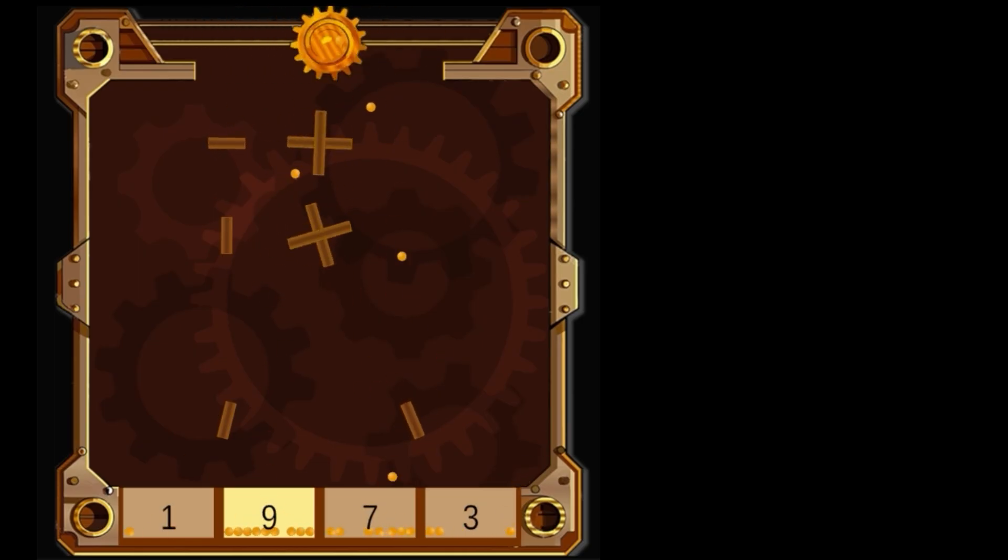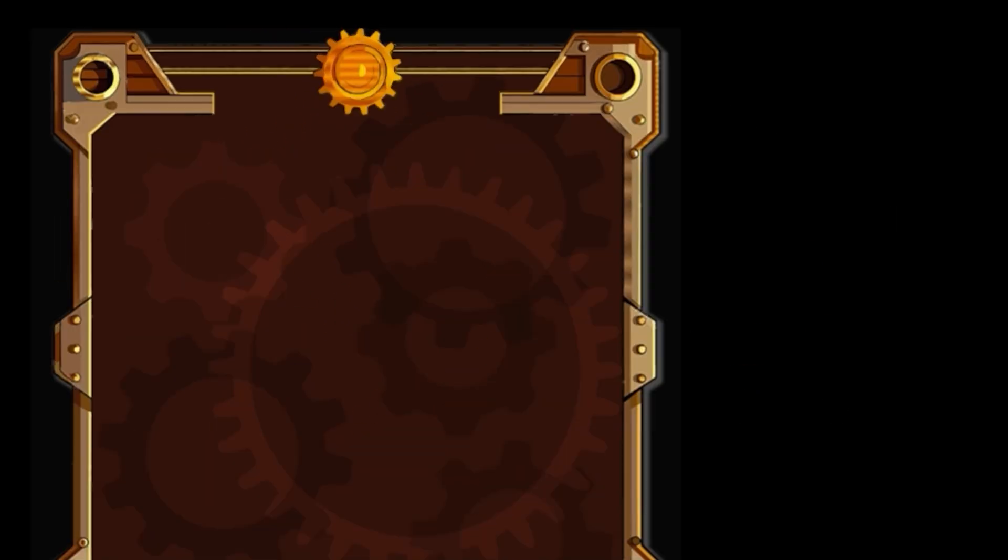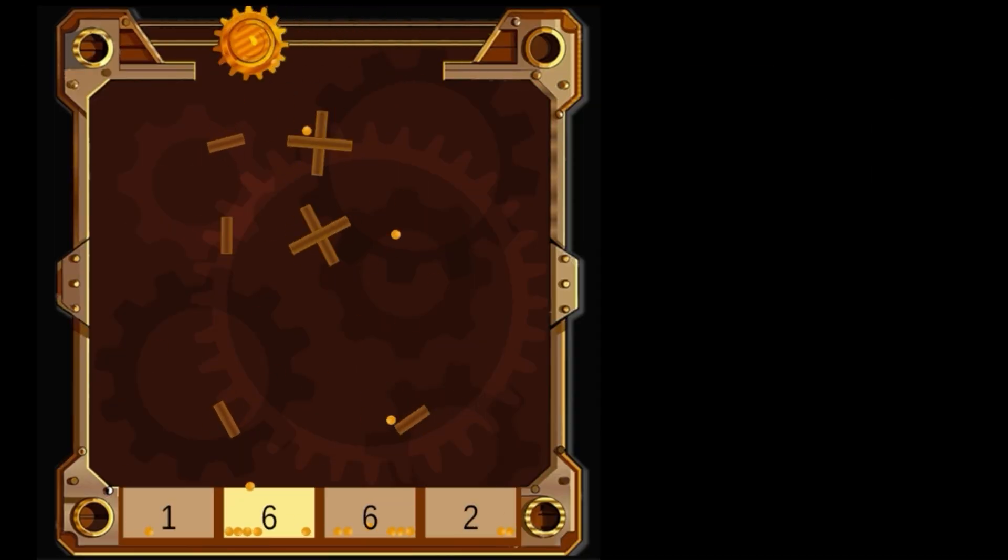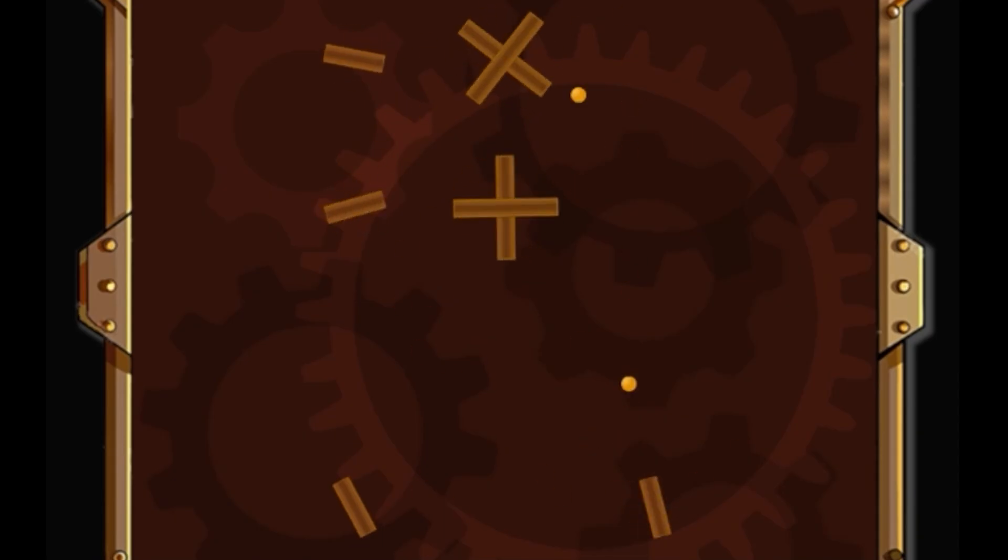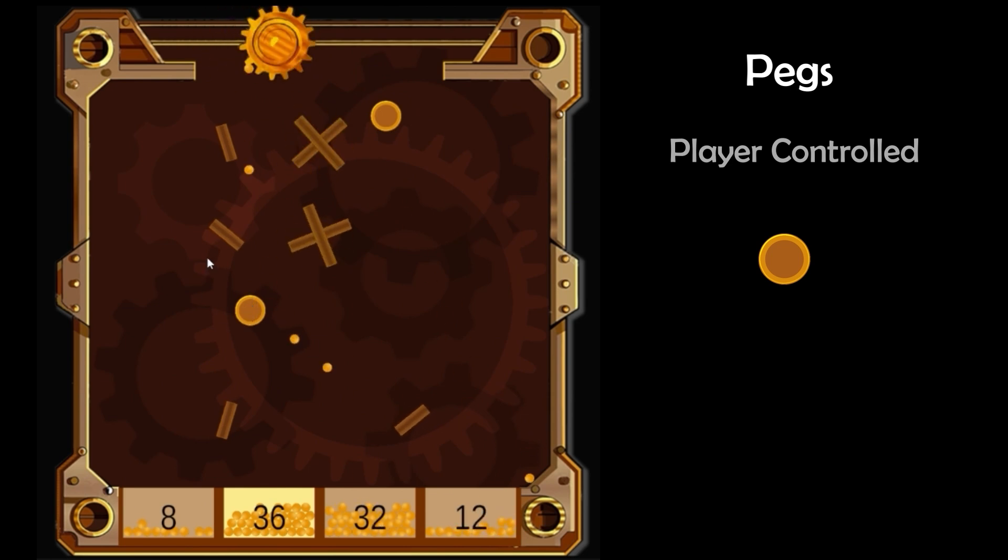In this game, probability is woven into almost every part of the ball's journey. It starts with the ball dispenser, goes to the plank and cross pegs, and dot pegs that you, the player, place to guide the ball towards the randomly highlighted collection box.